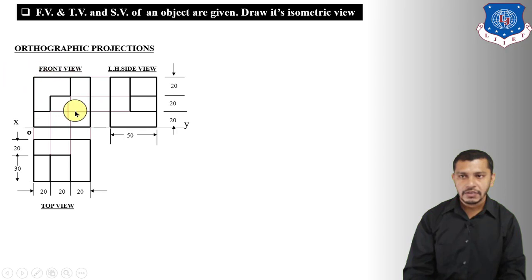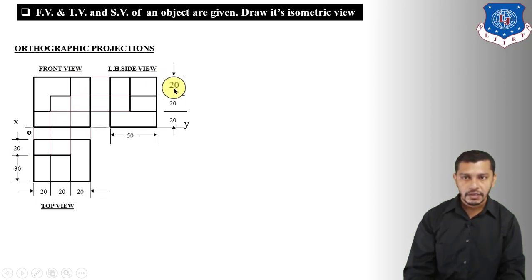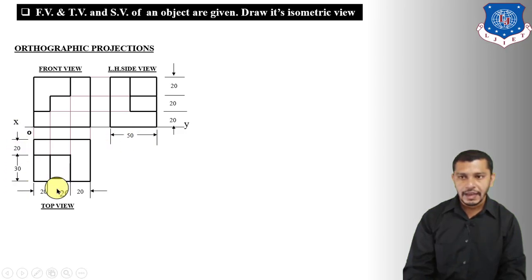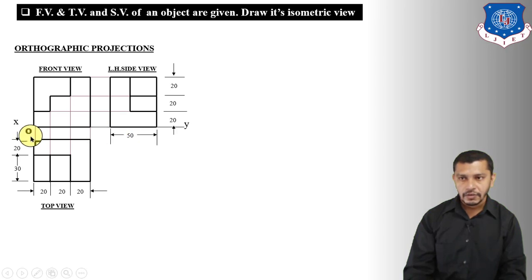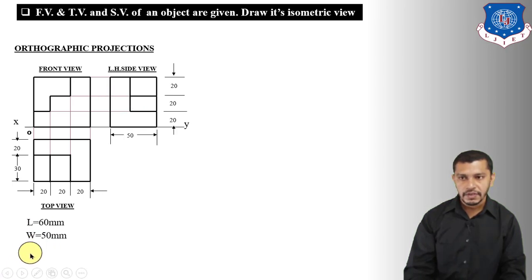The dimensions are marked here. The length of the object is 60mm, the height of the object is 60mm — that is 20 plus 20 plus 20 — and the width of the object is 50mm, which is 30 plus 20. Each step edge is 20mm. So the length of the object is 60, width is 50, and height is 60.